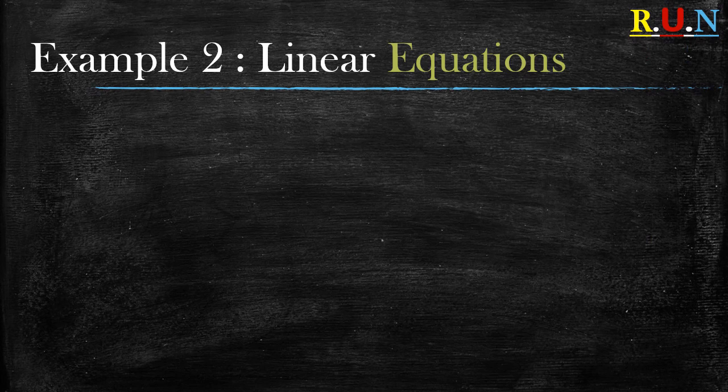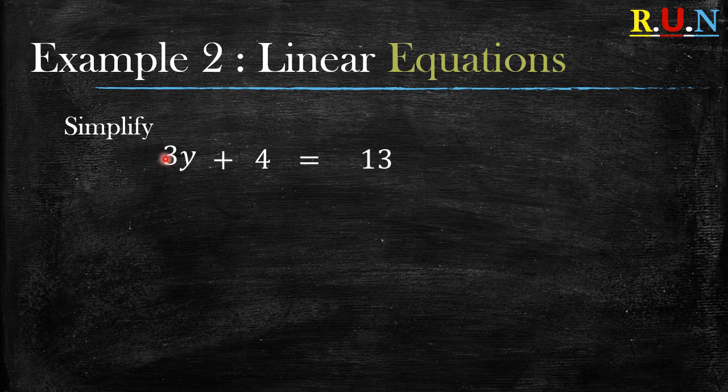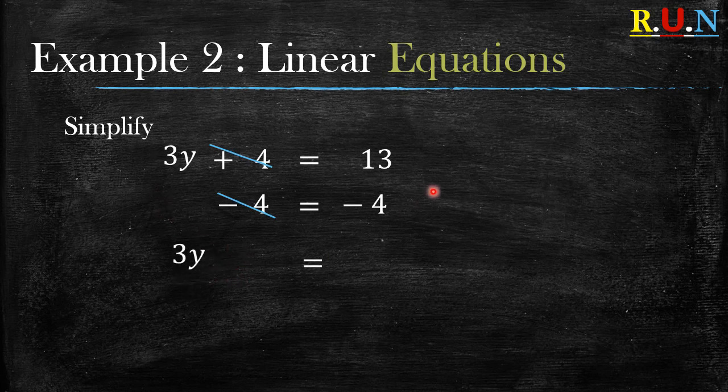Let's look at example number 2. In this example I'm going to be using the first method. What do you do when you have a question like this and you're told to simplify? We want the y, this variable. The first thing is to get this 3y to be alone on this side. We have 3y plus 4. We cancel out this 4 by minusing a 4. Remember, when you minus a 4 on this side of the equation, you need to minus a 4 on the other side as well. What's 4 minus 4? It will cancel out and you are left with 3y. What about 13 minus 4? It equals 9.